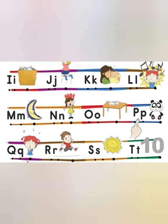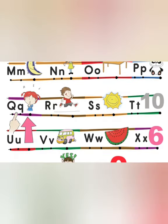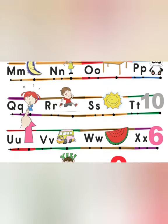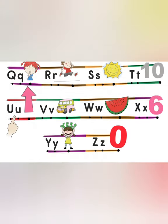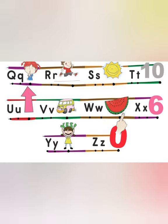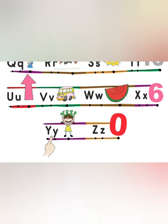P — Panda. Q — Quiet. R — Run. S — Sun. T — Ten. U — Up. V — Van. W — Watermelon. X — Six. Y — Yes. Z — Zero.